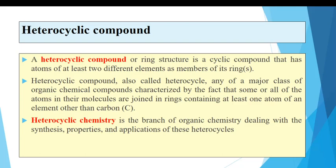So whenever you have a heterocyclic structure, the ring contains two different atoms — one is carbon and another element is other than carbon. Heterocyclic chemistry is a branch of organic chemistry dealing with the synthesis, properties, and applications of these heterocyclus.